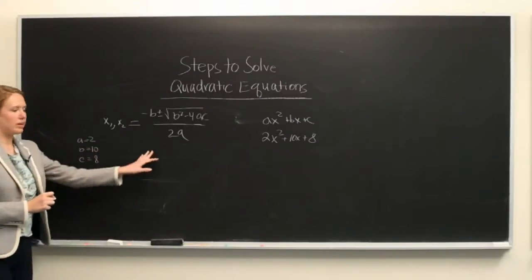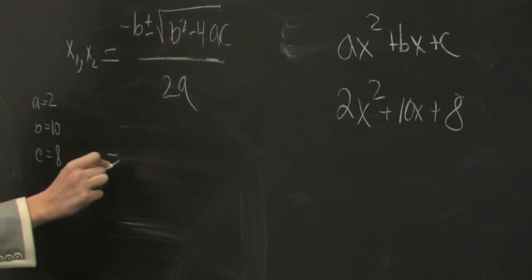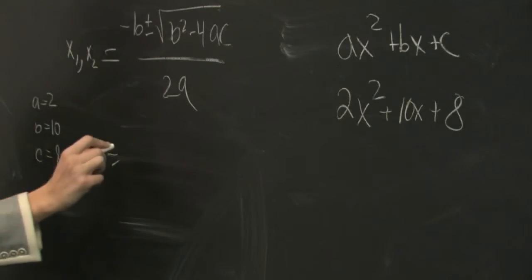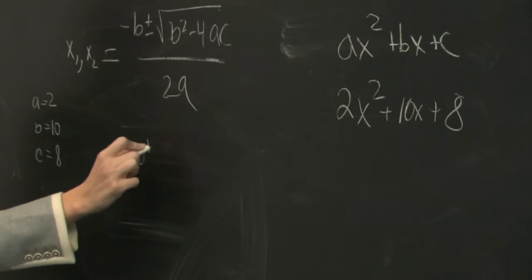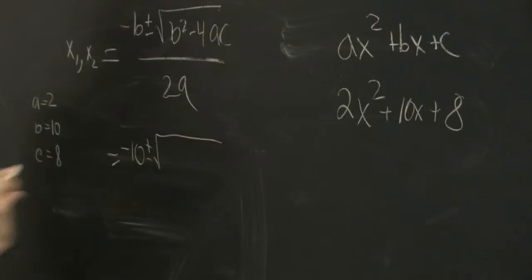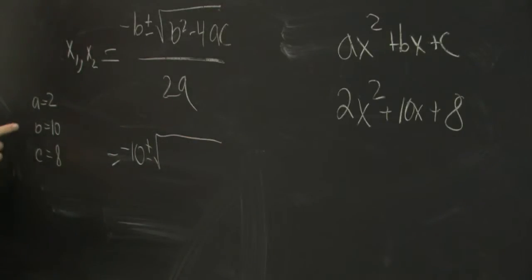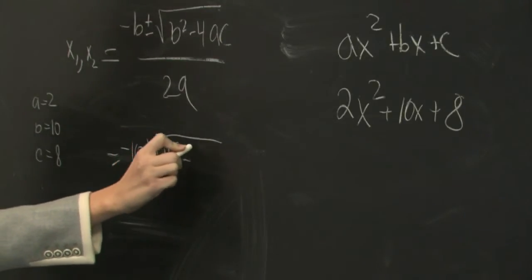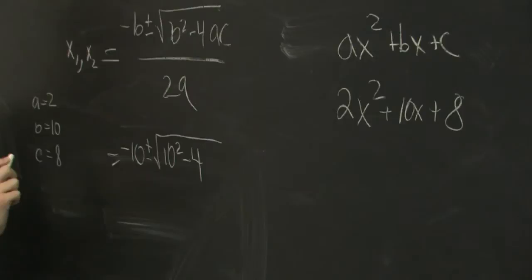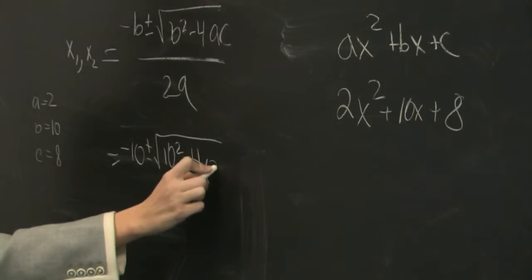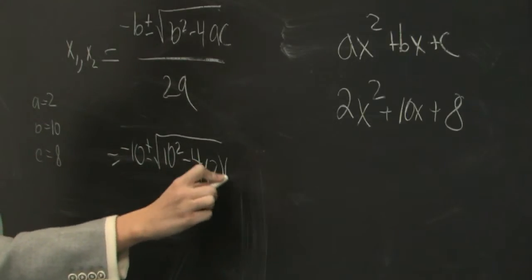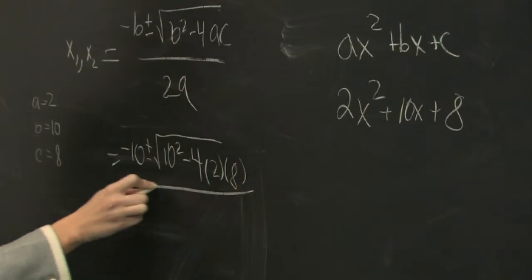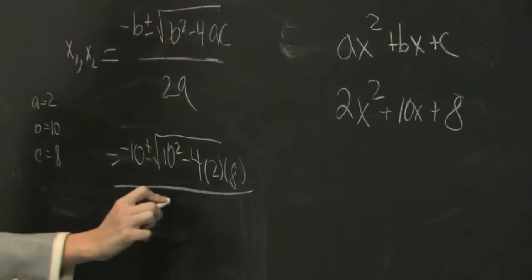When we go in and fill in the quadratic equation, we're going to have negative 10 plus or minus the square root — so again we're just filling in these numbers — 10 squared minus 4 times 2 times 8, all over 2a, which will be 2 times 2.